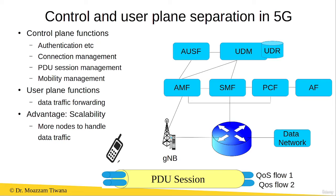In the 5G access network, between the user equipment and the gNB, we have a direct signaling link over the wireless channel. And between the user equipment and the AMF in the 5G core network, we have another direct signaling link.